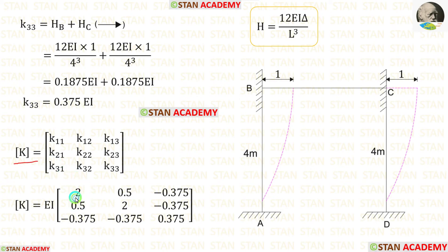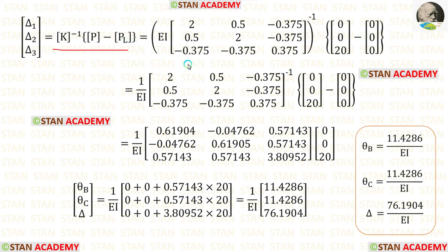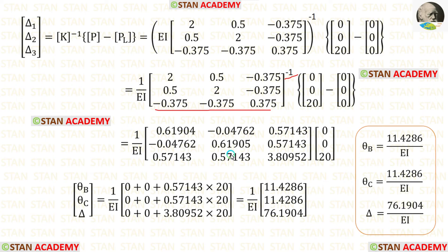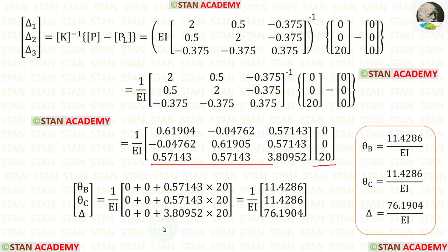In the stiffness matrix, we have now calculated all the values. Let us apply them, keeping EI outside as a common factor. For this matrix we need to find the inverse; we can apply all values in the calculator to get the inverse. After finding K⁻¹ and adding the P and PL matrices, then multiplying, we get the values of θB, θC, and delta.